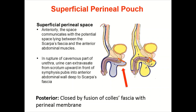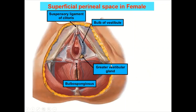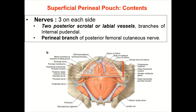Contents of the superficial perineal pouch include the root of the penis — comprising the bulb and crura — with associated muscles: bulbospongiosus, ischiocavernosus, and the superficial transverse perinei muscle posteriorly. All these muscles are supplied by muscular branches of the perineal nerve. In females, the contents include the bulb of the vestibule covered by bulbospongiosus, crura covered by ischiocavernosus, and the greater vestibular glands just behind the bulb. Vessels include posterior scrotal or labial vessels and transverse perineal vessels from the internal pudendal artery.